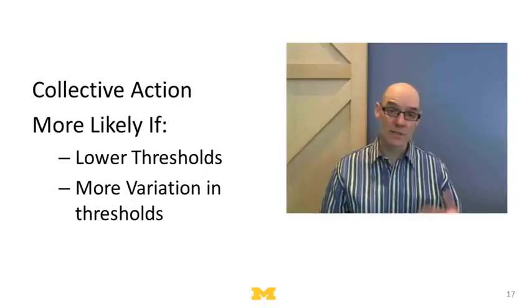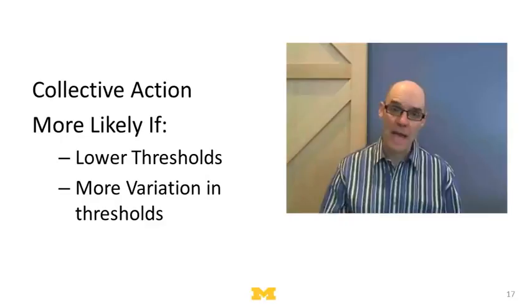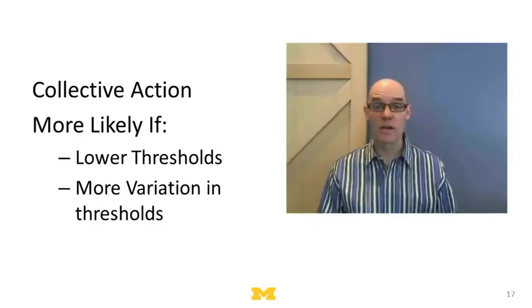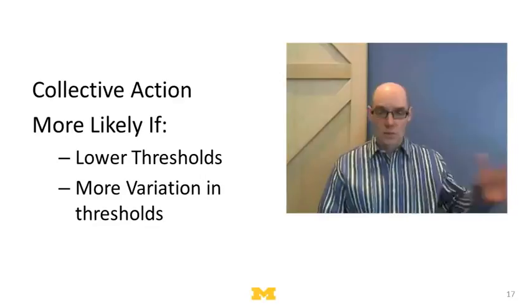All right, so what do we learn from this? We learn that collective action, collective dissipation is more likely to happen if there's lower thresholds, if people are really angry, really upset, or really want to wear the purple hat. But we also learn, and this is the surprising part, that it's more likely to happen if there's more variation in the thresholds, if there's more people who at the low end want to wear the hats or participate in the collective action, that can cause the whole system to ripple, can cause a cascading effect in which you get collective action.